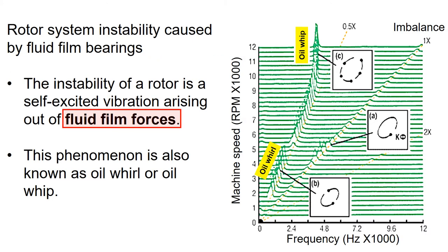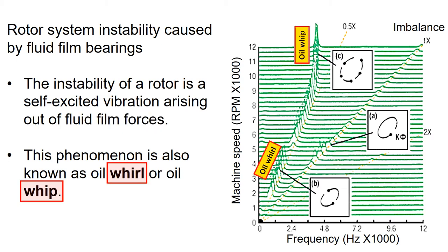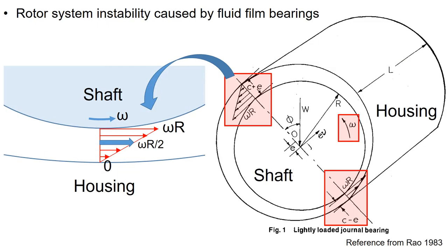The instability caused by fluid film bearings is due to self-excited vibration arising from the fluid film forces. This phenomenon is known as oil whirl or oil whip, and the frequency spectrum signal is shown on the right. To understand this phenomenon, let's consider a lightly loaded journal bearing where the pressure-induced flow is assumed negligible.